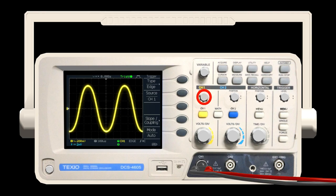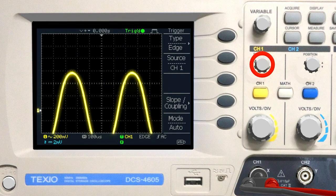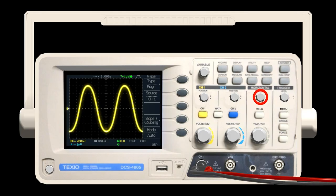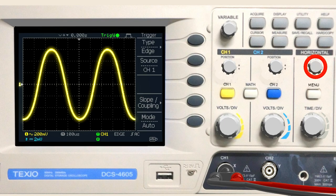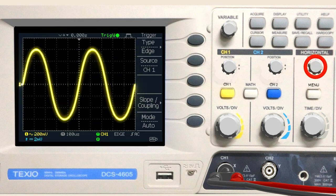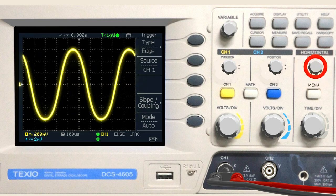Turn this knob to move the waveform up and down. Turn this knob to the right to move the waveform to the right. And turn it to the left to move it to the left.